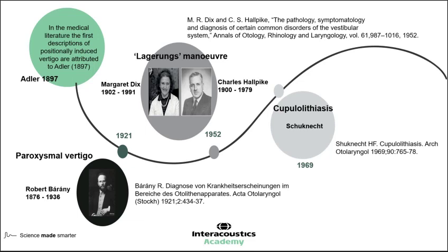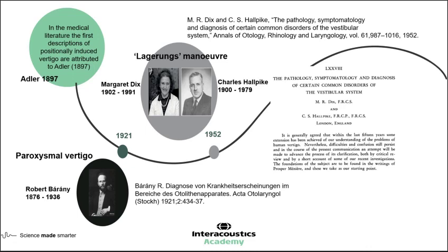Even then, the pathophysiology — the actual process behind how this condition affected the peripheral vestibular semicircular canals — wasn't fully understood. The first major insight came from Schuknecht in 1962, and certainly by 1969, through histology of temporal bone examinations, who came up with the theory of cupular lithiasis: the idea that otoconia were in the semicircular canal resting on the cupula, making it heavier and gravity sensitive. There's a very detailed paper by Dix and Hallpike from 1952 looking at three different patient groups, including the 100 BPPV patients.